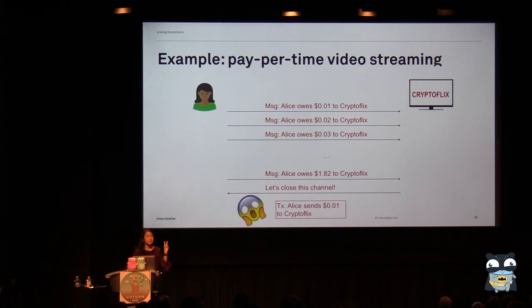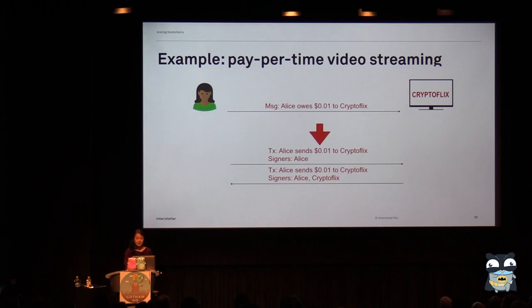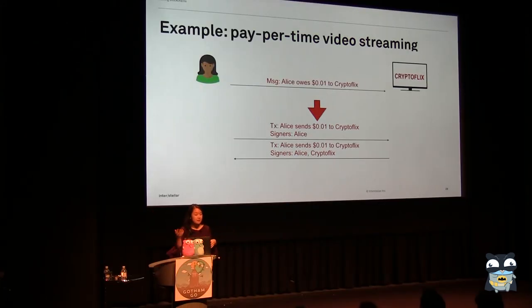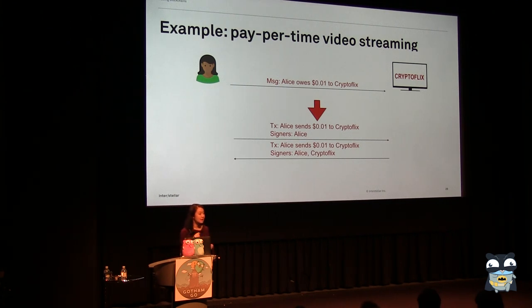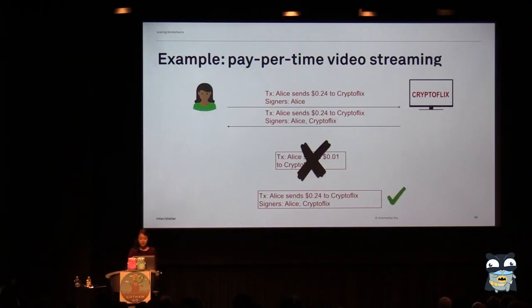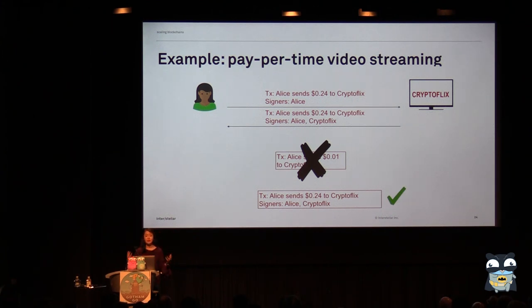So actually, when we talk about these messages on payment channels, what's happening is that we're sending transactions that are not being submitted to the network, but we're sending and signing them. Alice signs the transaction saying she owes me a certain amount of money and sends it to me, and I sign it also. So if Alice tries to steal money from me by sending a transaction with a lower amount, I can provide the valid one with both of our signatures so the entire network knows it's valid and I can get the money we both agreed on.